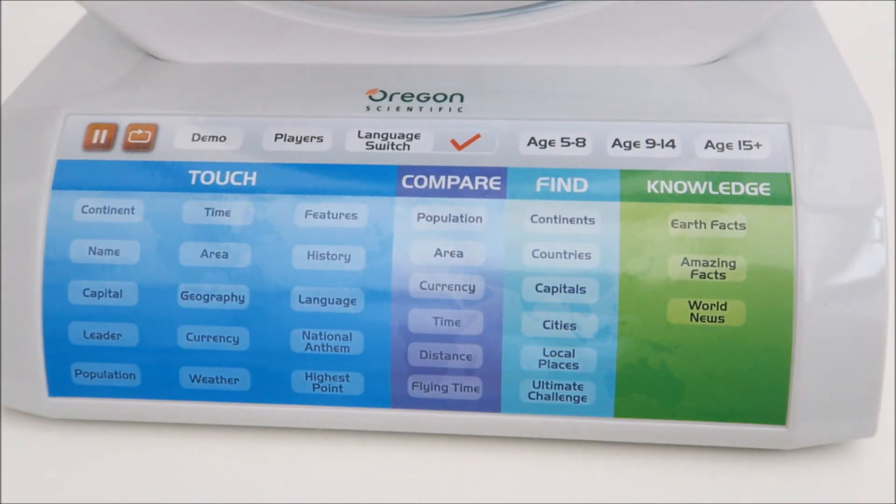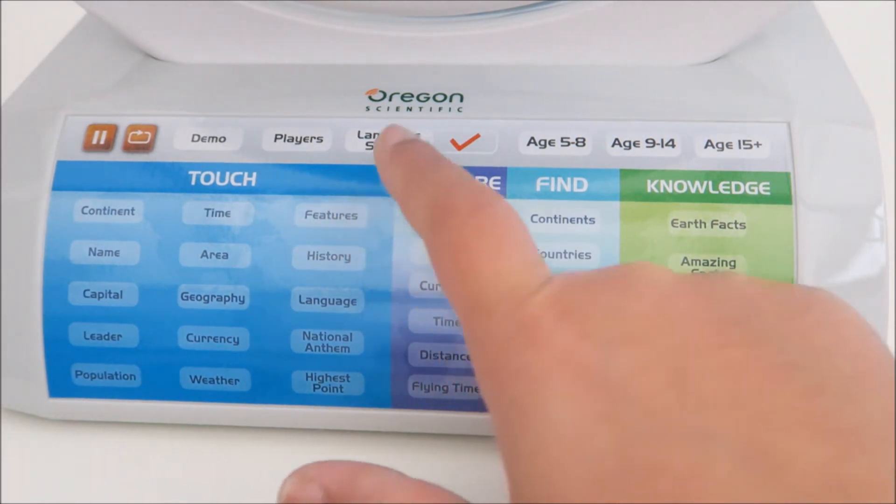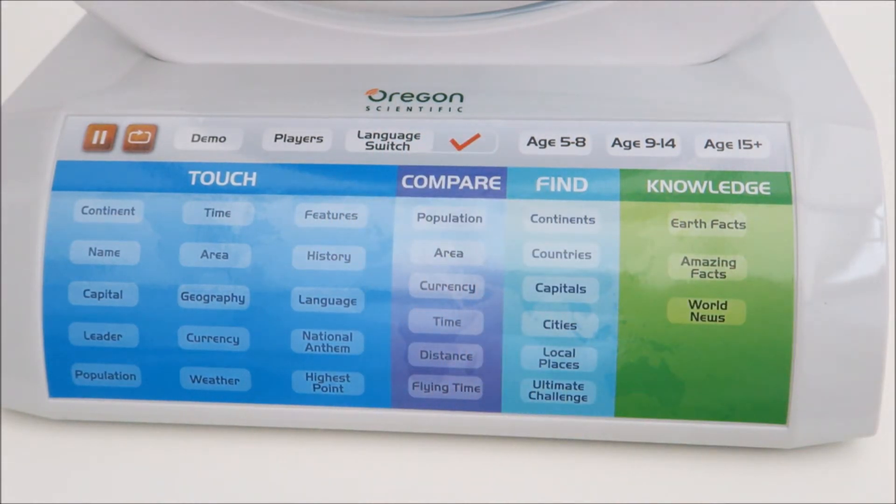This smart globe comes with 42 built-in activities in two languages. You can either change to English or French. There are more language available for download through the website itself.